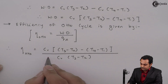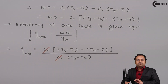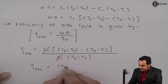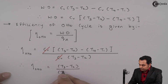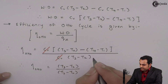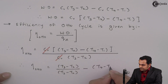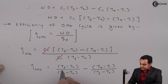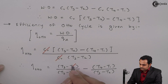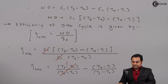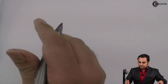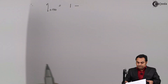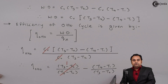After cancelling Cv, we get efficiency = (T3 − T2)/(T3 − T2) − (T4 − T1)/(T3 − T2), which simplifies to: efficiency of Otto cycle = 1 − (T4 − T1)/(T3 − T2). I will keep this as Equation 1.